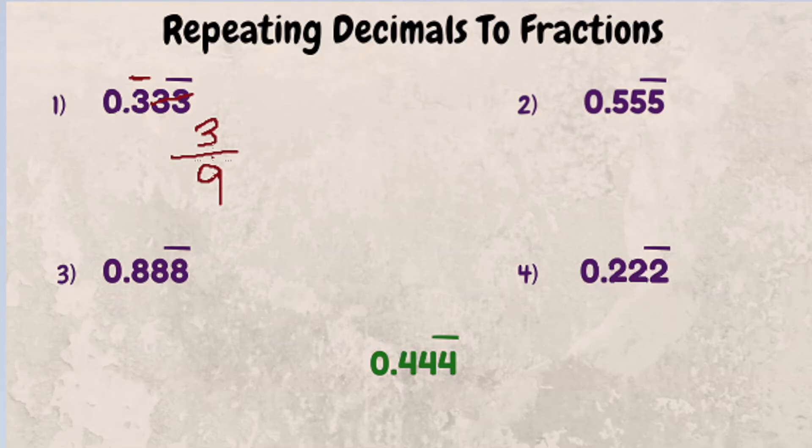So for this example, it would be three ninths, but you can see that that fraction can also be reduced. So you can take it and reduce it down to be one third. One third is 0.333, or three repeating.